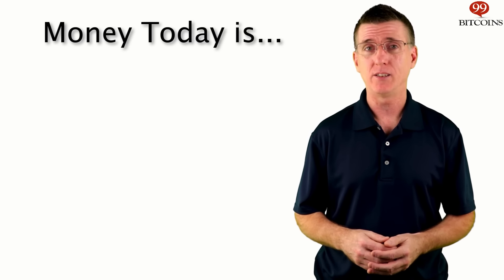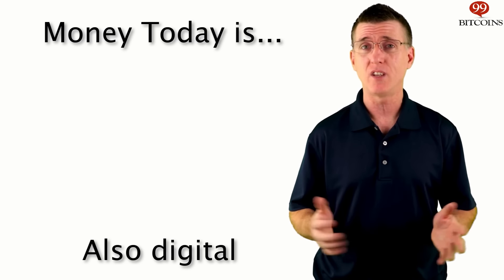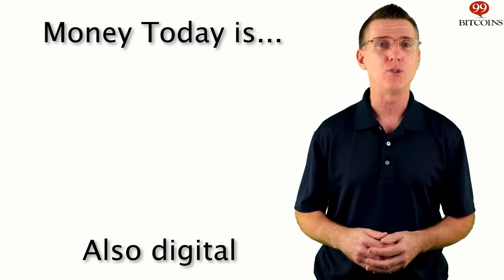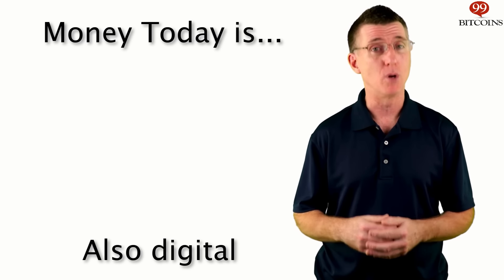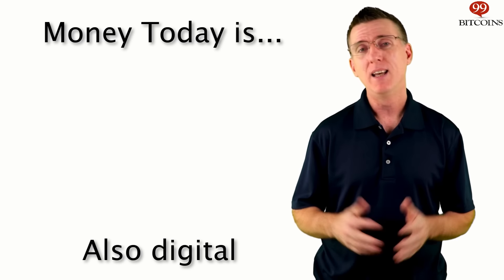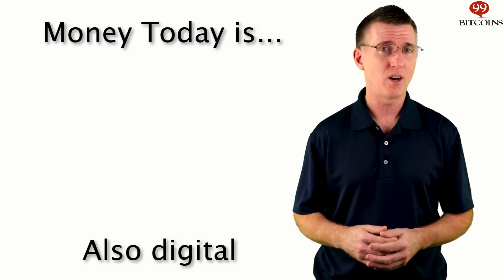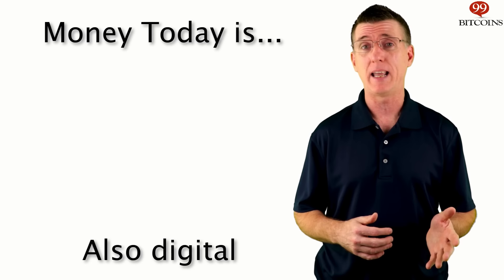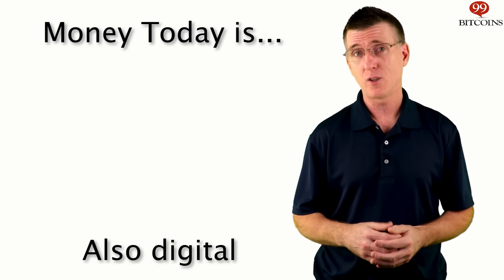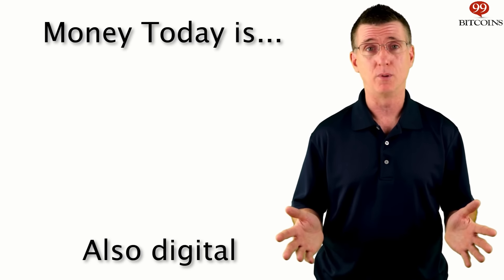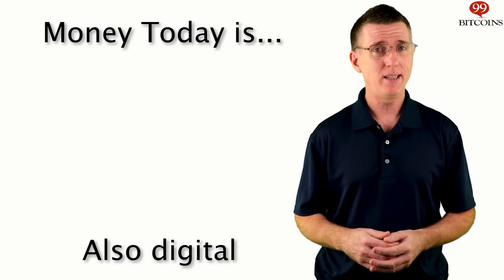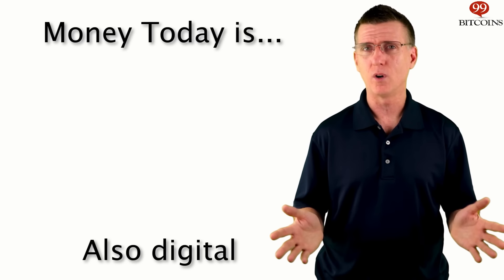Once fiat money was in place, the move to digital money was pretty simple. We already have a central authority that issues money, so why not make money mostly digital and let that authority keep track of who owns what? Today, we mainly use credit cards, wire transfers, PayPal, and other forms of digital money. The amount of physical money in the world is almost negligible, and it's getting smaller with each year that passes. So if money today is digital, how does that even work?